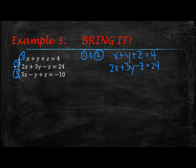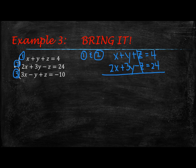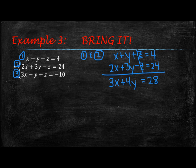If I take equation 1 and equation 2 and write those out: x plus y plus z equals 4, and 2x plus 3y minus z equals 24. Hopefully you notice that the z and the negative z will cancel if I add those up. So I'm going to end up with 3x plus 4y equals 28.